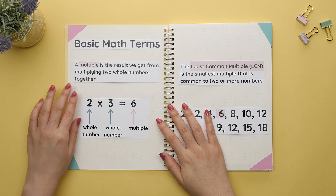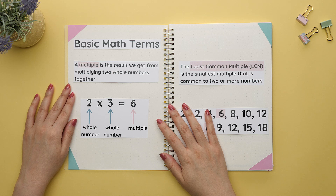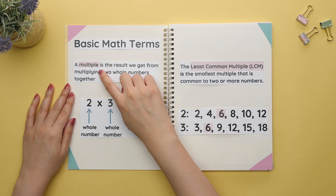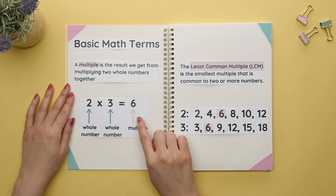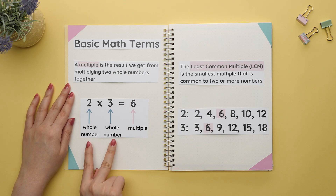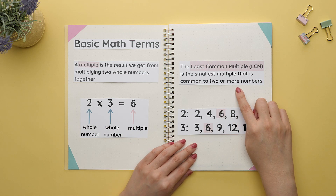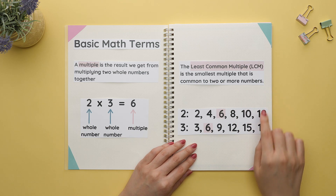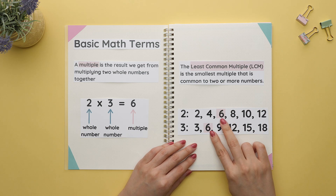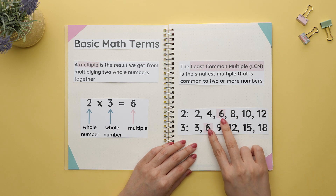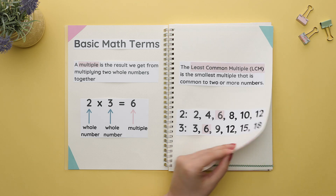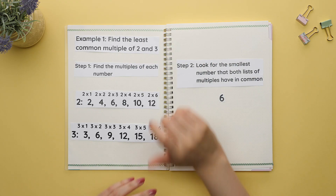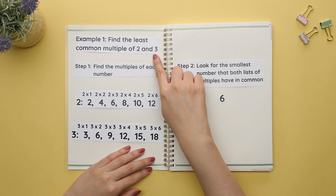Now let's review two basic math terms. A multiple is the result we get from multiplying two whole numbers together. The least common multiple is the smallest multiple that is common to two or more numbers. For example, we are asked to find the least common multiple of two and three.